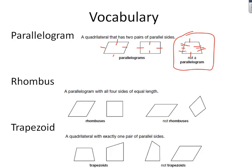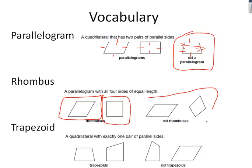A rhombus has all four sides of equal length, so a square is a regular quadrilateral and it's also a rhombus. These are not rhombuses because this side is longer than this one, and this is shorter than this. The trapezoid is a quadrilateral with exactly one pair of parallel sides, and the other sides don't matter.